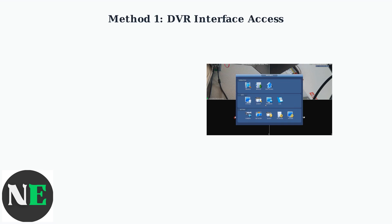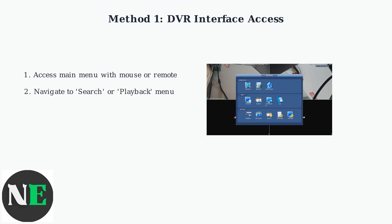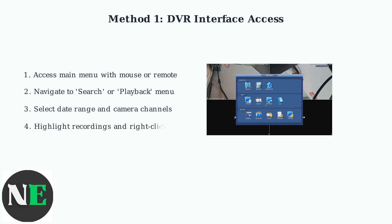The DVR interface method involves accessing your DVR's main menu directly. You'll see an interface with various operation options including search and playback functions. The DVR interface method follows five key steps. First, access the main menu using your mouse or remote control. Then navigate to the search or playback menu where you can browse your recordings. Next, select your desired date range and camera channels to filter the recordings. Highlight the specific recordings you want to delete, then right-click to access the context menu. Finally, select the delete option and confirm the action with your administrator password. This ensures only authorized users can remove recordings.